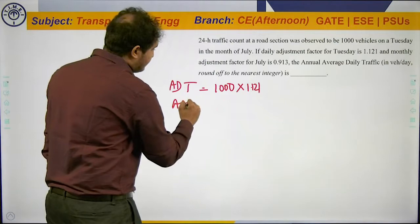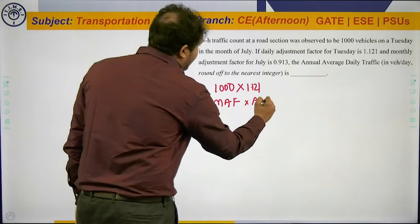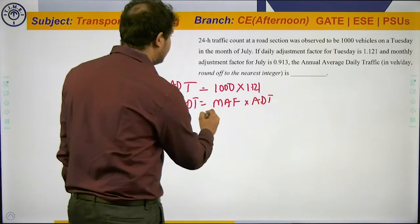will be: AADT equals monthly adjustment factor times average daily traffic, which equals